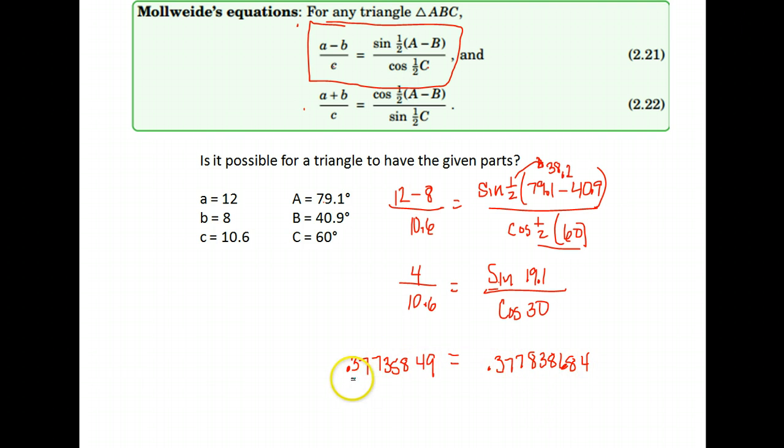Notice the numbers are not exactly the same, but to the thousandth place they are. So this yes is a valid triangle. There may have been some rounding here and there that threw it off just a bit, but as long as they are pretty much the same number, you can safely say that yes, these are the possible values for a triangle using this property.